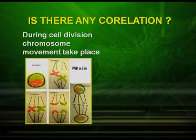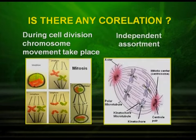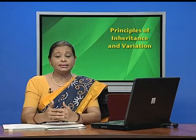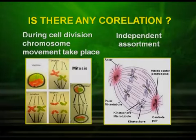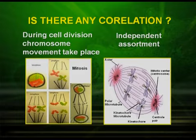So, is there any correlation between the chromosomes and genes? During gamete formation, chromosome movement takes place. If you can recall independent assortment during Mendelian inheritance, you could see that the chromosomes assort independently. The Mendelian factors could also assort independently. This could be correlated with the movement of chromosomes during meiosis.